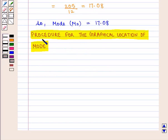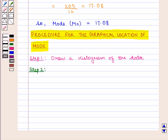Now we shall study the procedure for the graphical location of mode. The first step is to draw a histogram of the data. For convenience, only 3 rectangles may be drawn, that is rectangles for modal, pre-modal, and post-modal class.